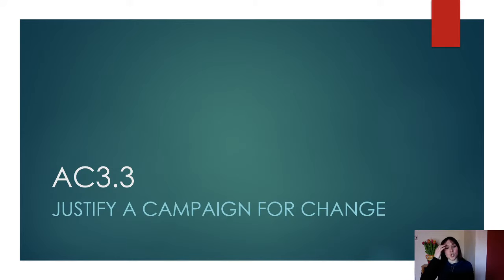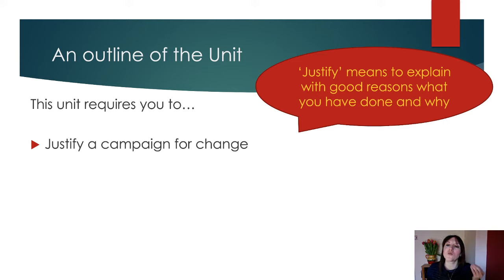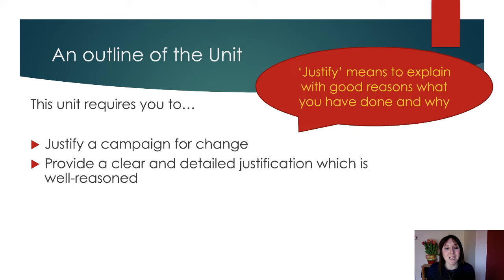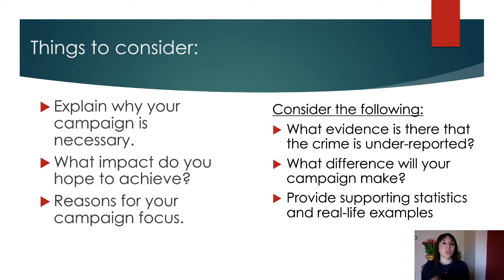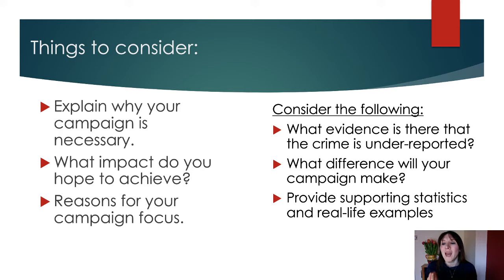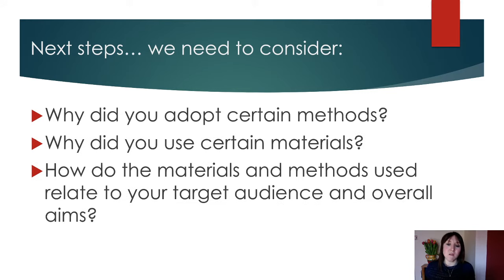The final section is the justify. You've planned it and made it — now you need to justify why. Justify means you explain with good reasons what you have done and why. You need to provide clear, detailed, and well-reasoned justification relating to the whole campaign: the audience, the materials, the objectives, etc. Explain why your campaign is necessary, what impact you hope to achieve, and what are the reasons for your campaign focus — why specifically white collar crime, why specifically fraud or credit card fraud? Consider: what evidence is there that it's underreported? Why will your campaign make a difference? What statistics and real-life examples do you have? Why did you adopt certain methods and materials, and how do they relate to your target audience and overall aim?